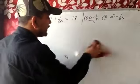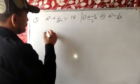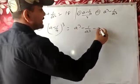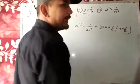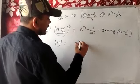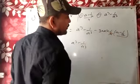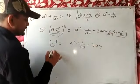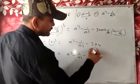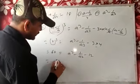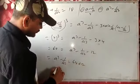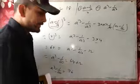Now we find a cube minus 1 by a cube. Using a minus 1 by a whole cube equals a cube minus 1 by a cube minus 3 into a into 1 by a into a minus 1 by a, and the value a minus 1 by a equals 4: 4 cube equals a cube minus 1 by a cube minus 3 into 4. So 64 equals a cube minus 1 by a cube minus 12, giving a cube minus 1 by a cube equal to 64 plus 12 equals 76.